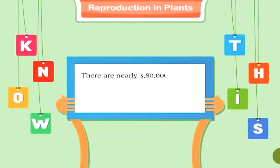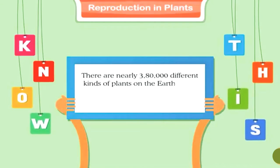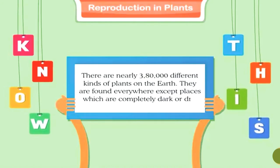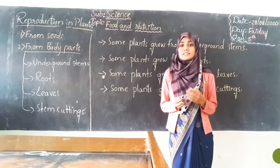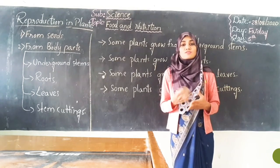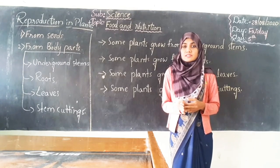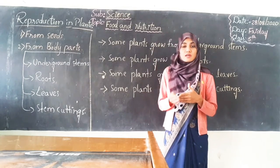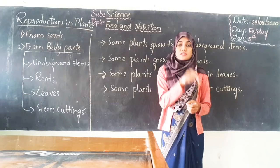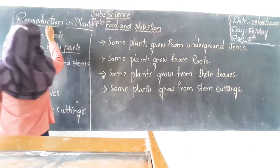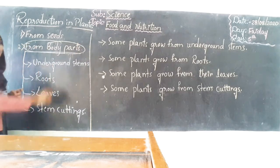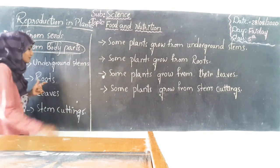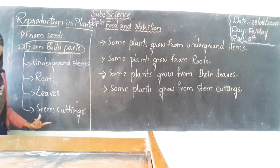There are nearly 3,80,000 different kinds of plants on the earth. They are found everywhere except places which are completely dark and dry. Now you know how the dispersal of seeds happens — how seeds get scattered and those scattered seeds get converted into plants and trees. So till this we have discussed about the reproduction of plants from seeds, and now we will discuss the reproduction in plants from the body parts. Plants can be grown through underground stems, roots, leaves, and stem cuttings.